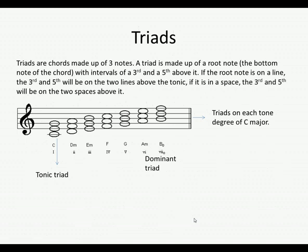Triads are really chords made up of three notes. A triad is built from a root note — which is just a fancy way of saying the bottom note of the chord — and then intervals of a third and a fifth above it. If the root note is on a line, the third and fifth will be on the two lines above it. If it is in a space, the third and fifth will be on the two spaces above it.